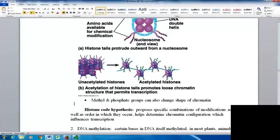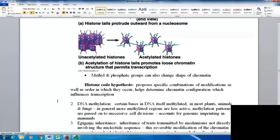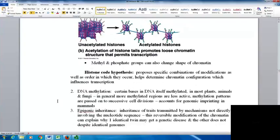Methyl and phosphate groups can also change the shape of chromatin. The histone code hypothesis proposes that specific combinations of modifications, as well as the order in which they occur, help determine chromatin configuration, which in turn influences what is transcribed.